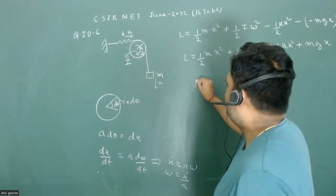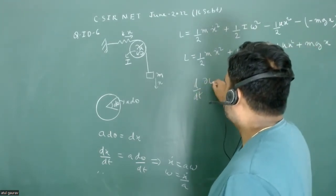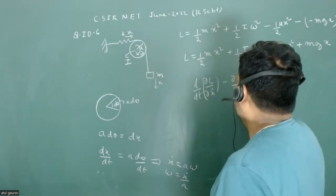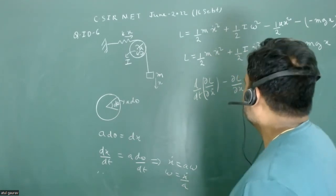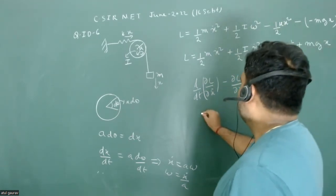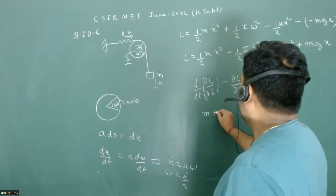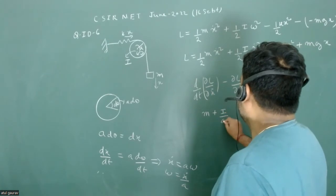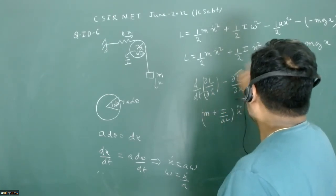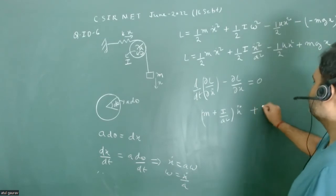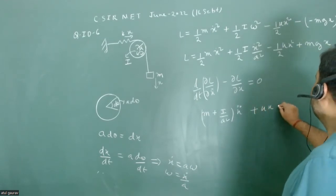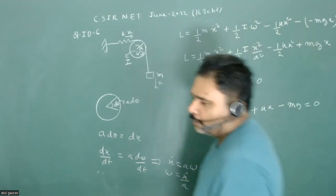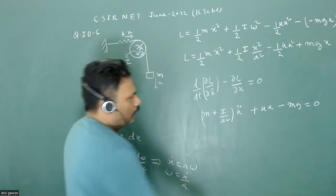Applying the Euler-Lagrange equation — d/dt(∂L/∂x-dot) − ∂L/∂x = 0 — we get: (m + I/a²) x-double-dot + k x − mg = 0.